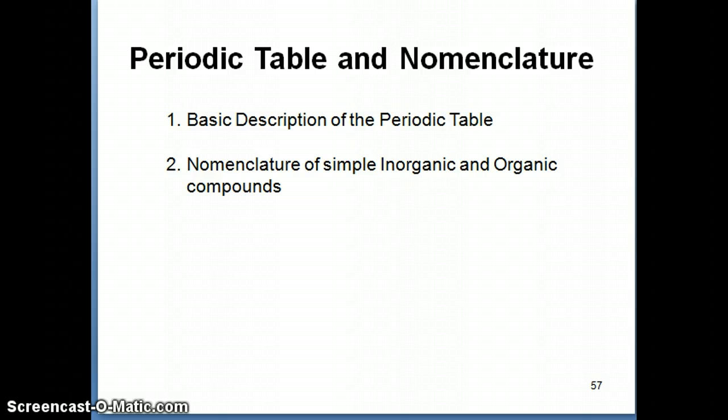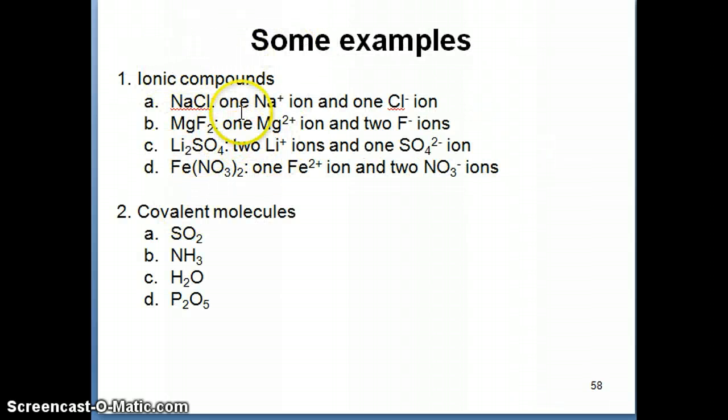Before we start with the periodic table, I want to continue from the previous topic where I was talking about ionic and covalent compounds, just to give some examples. Ionic compounds are electrically neutral species composed of cations and anions. For example, NaCl is an ionic compound because it has one sodium plus ion and one chloride minus ion. MgF2, magnesium fluoride, is an ionic compound because it has one Mg2+ ion and two F- ions, the magnesium ion and the fluoride ions.